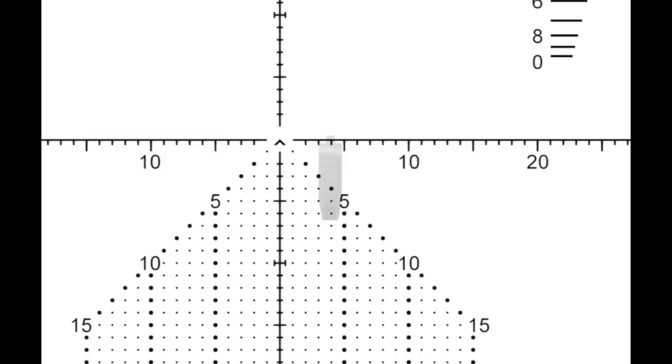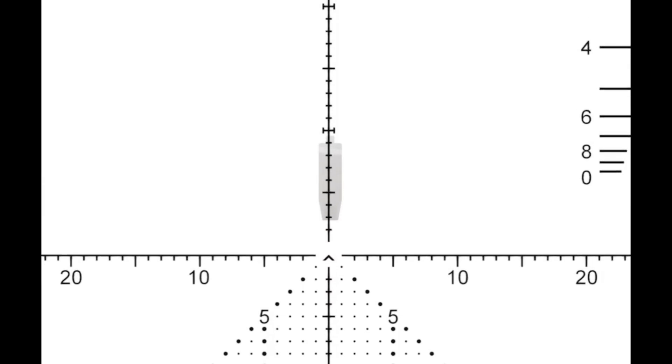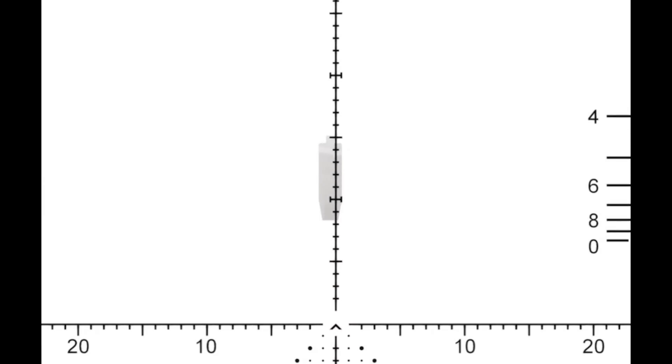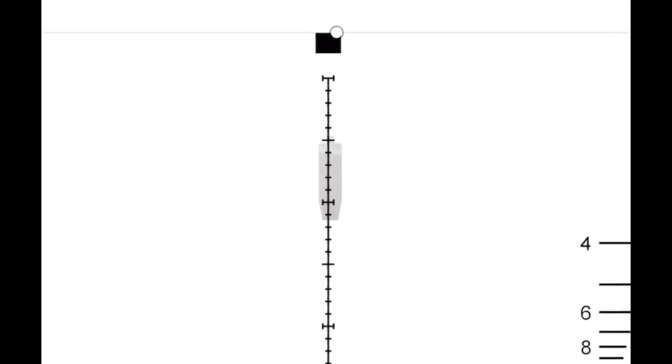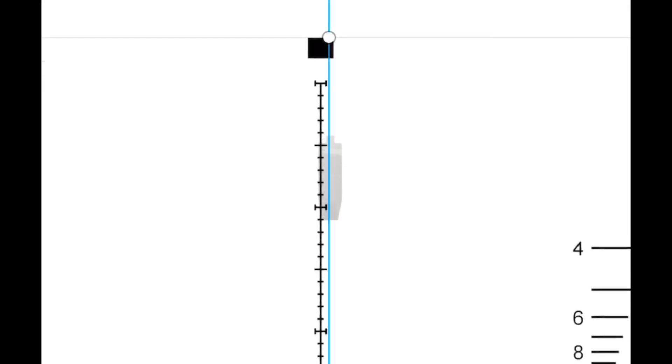We've even added additional minutes of angle for extreme long-range precision shooters. You can go up to 10, 15, 20, 25, 30 minutes of angle. So if you're shooting, let's say, a mile plus, you can dial in with this thing and have plenty of room to hold off.